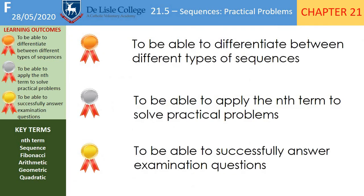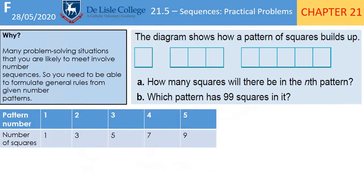So today's success criteria: Bronze is to be able to differentiate between different types of sequences — well, we've just done that. Silver is to be able to apply the nth term to solve practical problems. And then Gold is to be able to successfully answer examination questions. Today, everything we've learned, we're tying it all together and looking at real-life problems. I'll show you how to do something and then you'll have a go at questions. There are timings — please try to stick to those.